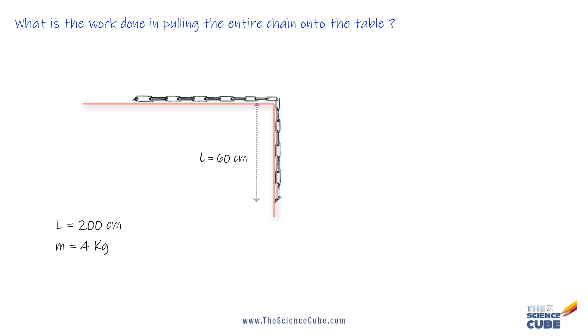Let us first find the mass of chain that is hanging. Since the chain has uniform mass, the mass of chain hanging would simply be the ratio of hanging length to the total length multiplied by the total mass.